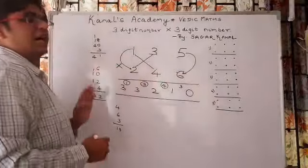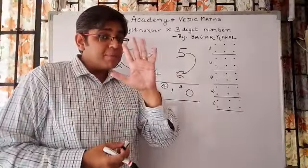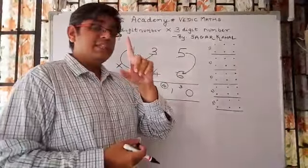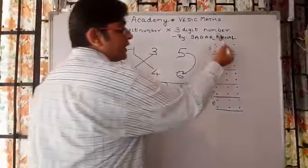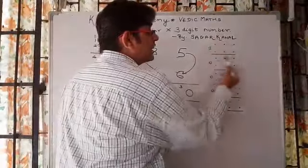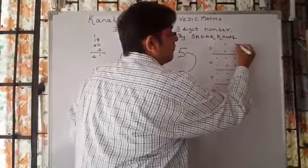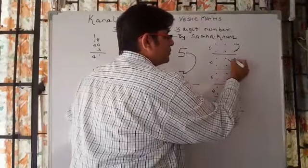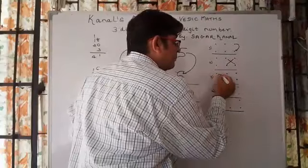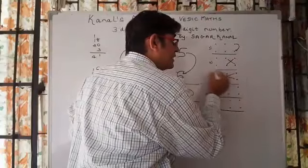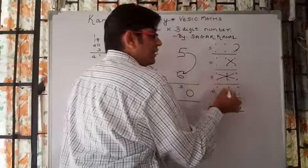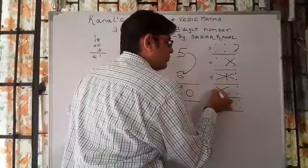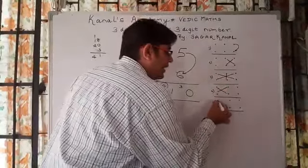And the last step: 2 times 1 is 2 plus 1 is 3. So 33,210 is the answer. So we have done this in five steps. Once again I will be revising these five steps with you all using these dots here. These dots are three-digit numbers. First step we multiplied this, second step cross multiply these two numbers, third step multiplying these three numbers, fourth step cross multiply this again, and last step.